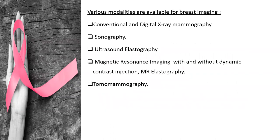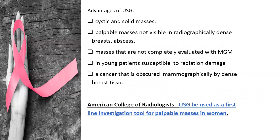The various modalities available include mammography, sonography, elastography, MR with and without contrast, MR elastography, and tomosynthesis mammography. The different advantages of ultrasound over other modalities include its ability to differentiate between cystic and solid masses. Masses not visible in radiographically dense breasts are better seen on ultrasound, and in young patients who are susceptible to radiation damage, ultrasound offers advantage over mammography.